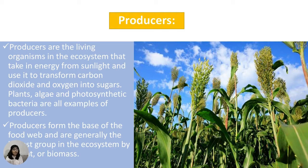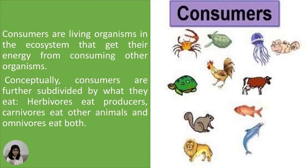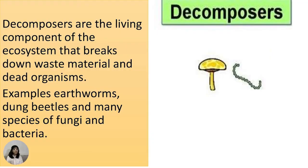Plants, algae, and photosynthetic bacteria are examples of producers. Producers form the basis of the food web and are generally the largest group in the ecosystem by weight and biomass. Consumers are living organisms that get their energy from consuming other organisms. Consumers are further subdivided: herbivores eat producers, carnivores eat other animals, and omnivores eat both. Decomposers are the living components of the ecosystem that break down waste material and dead organisms — for example, earthworms, dung beetles, and many species of fungi and bacteria.